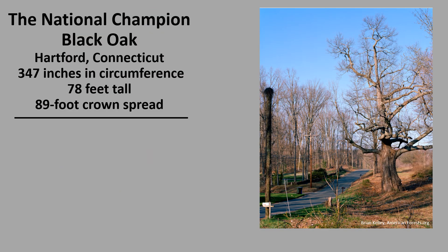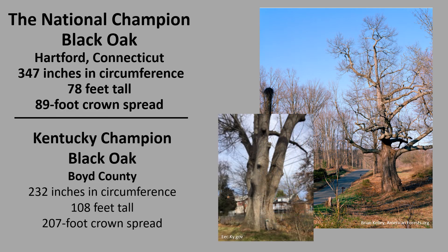The National Champion Black Oak is in Hartford, Connecticut. It's 347 inches in circumference, 78 feet tall, with an 89-foot crown spread. The Kentucky Champion Black Oak is in Boyd County — 232 inches in circumference, 108 feet tall, with a 207-foot crown spread. If you'd like to know more about champion trees, check out American Forest Champion Trees or the Kentucky Division of Forestry Champion Trees.